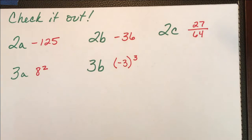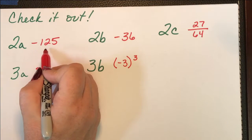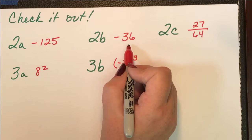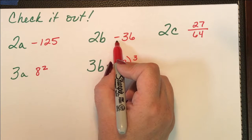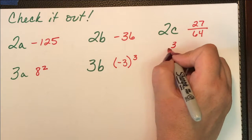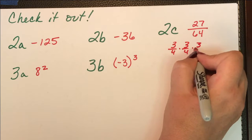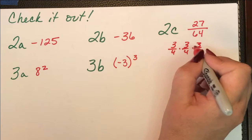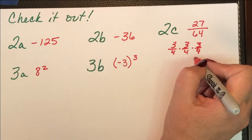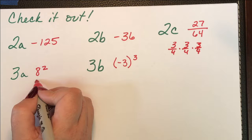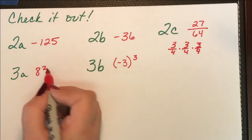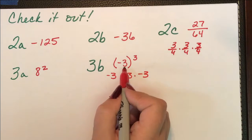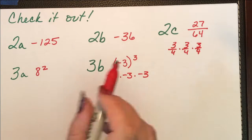So here are our check it out answers. Negative 5 times negative 5 times negative 5 is negative 125. We just did that problem together. This problem, only the 6 is squared. That negative stays still. So our answer is negative 36. This is actually 3 fourths times 3 fourths times 3 fourths, and you need to do 3 times 3 times 3, and 4 times 4 times 4. If you don't write it out, it's easy to make mistakes here. 3a, 64 base 8, that's 8 squared. And negative 3 times negative 3 times negative 3 is negative 27. So that's negative 3 cubed. And you have to have the parentheses or it's incorrect.